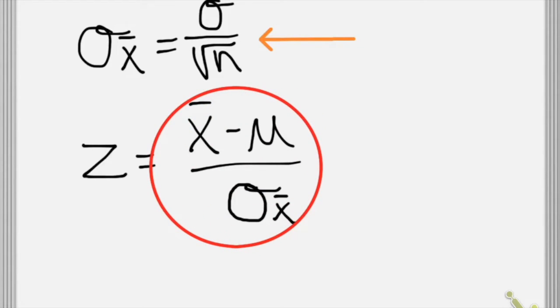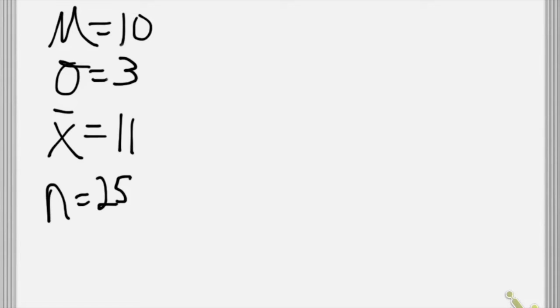It's just the sample mean minus the population mean divided by the standard error of the mean. That'll give you a z-score. So let's take a look and see how we do this. Let's say that we've got a population mean of 10 with a population standard deviation of 3, and a sample mean of 11 with a sample size of 25.